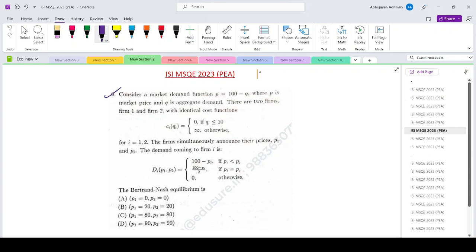Consider a market demand function P equals 100 minus Q, where P is the market price and Q is the aggregate demand. There are two firms, firm 1 and firm 2, with identical cost functions. CI equals 0 if QI is less than or equal to 10, and is infinite otherwise, for I equals 1, 2.